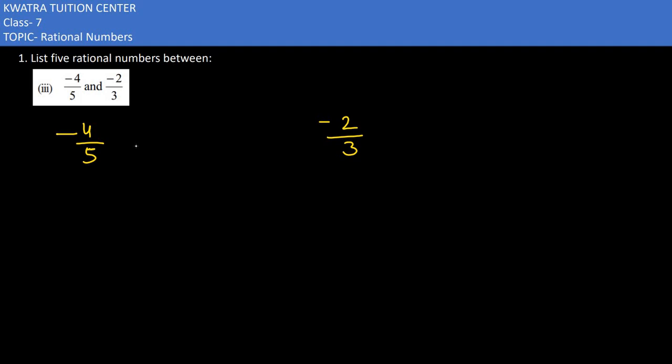So first of all, we need to take common denominators. The first one is 5 and the other one is 3, so the LCM would be 15. We will make the first fraction have denominator 15, so you would get minus 12 by 15.